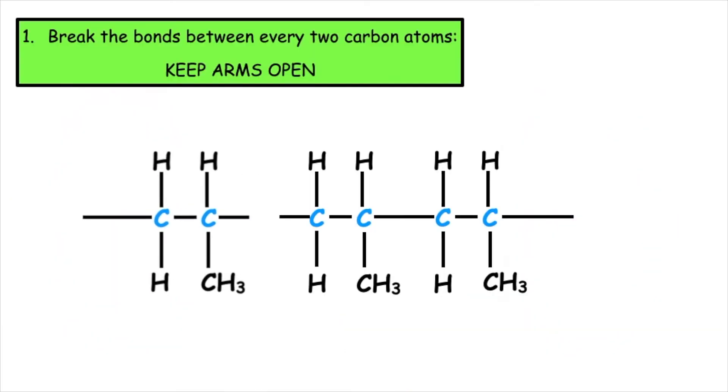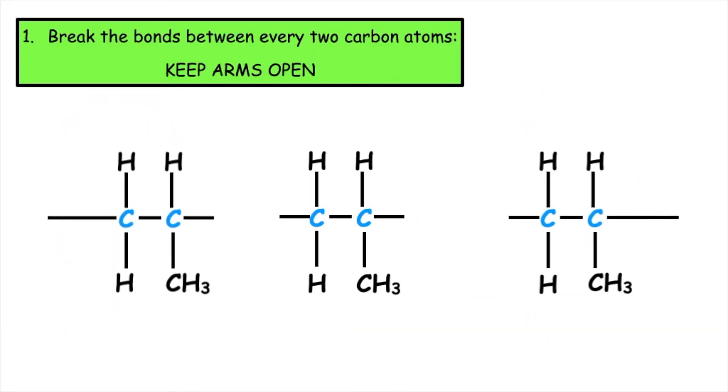Step number one, we want to break the bonds between every two carbon atoms. We must keep the arms open, and this is how we draw the repeating unit.